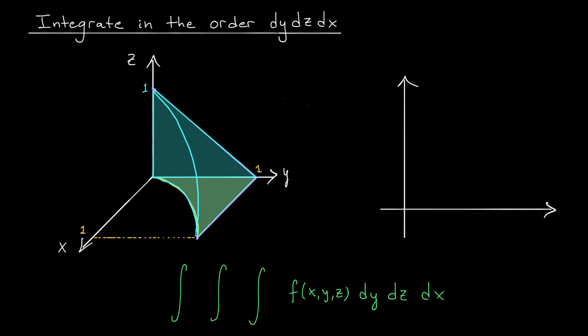Now we want a triple integral in the form dy dz dx. To find the bounds on the inner integral with respect to y, we imagine shooting a little arrow through the solid in the direction of the positive y-axis. The first surface it passes through is the curved face y = √x — that's our lower bound, and we already have y as a function of x so no rewriting is needed. The arrow exits through the flat plane z = 1 − y, which we rewrite as y = 1 − z — that's our upper bound. So y goes from √x up to 1 − z.